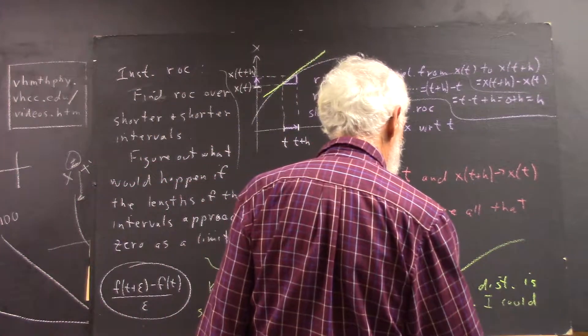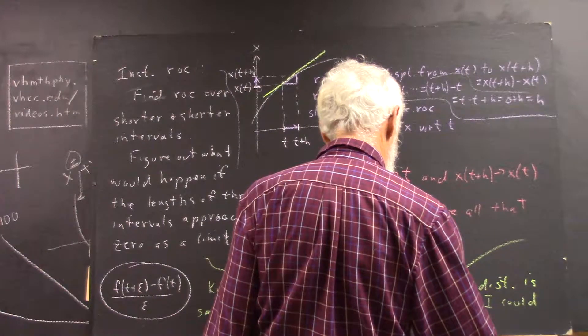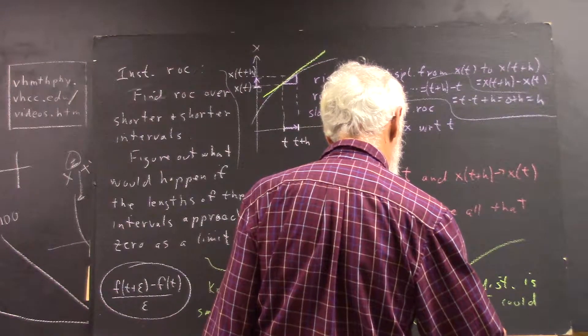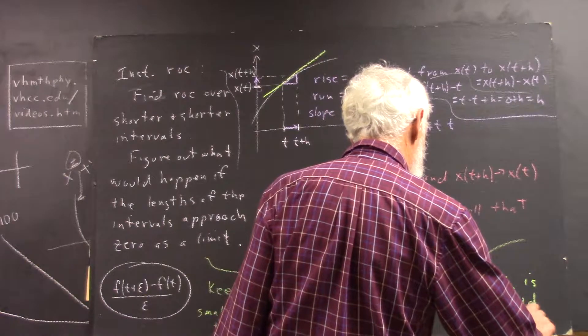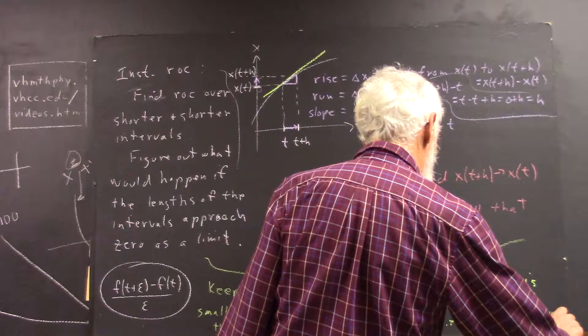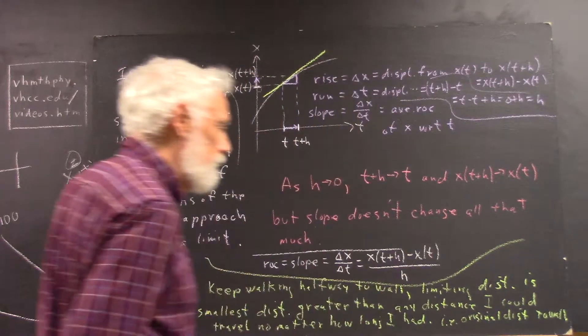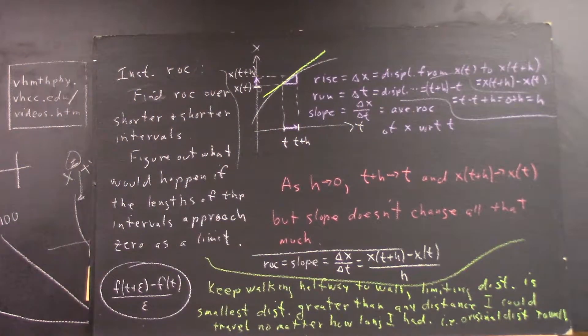I.e., the original distance. You probably can't read that. The original distance to the wall. Does that make any sense at all?